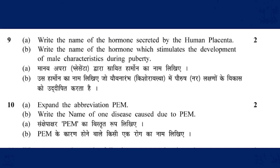We have a term here. We call it the name of the hormone which stimulates the development of female characteristics during puberty. That is the name of the hormone and the two terms. We call it HCG — human chorionic gonadotropin hormone — and the hormone testosterone.